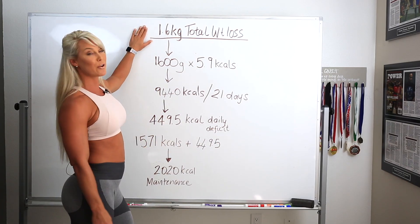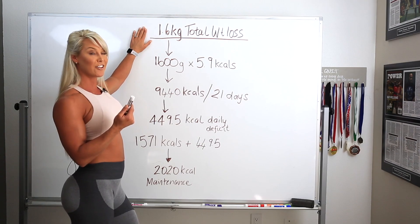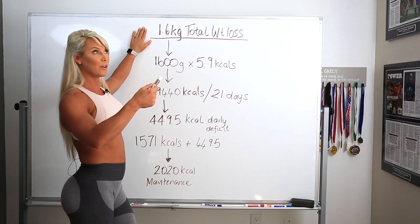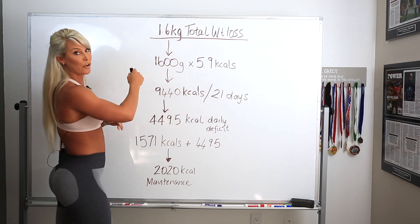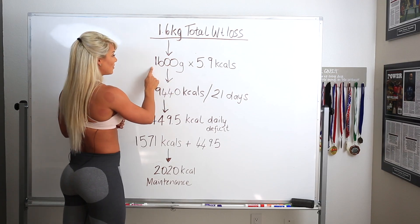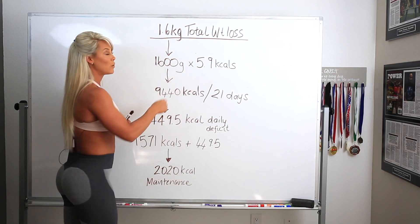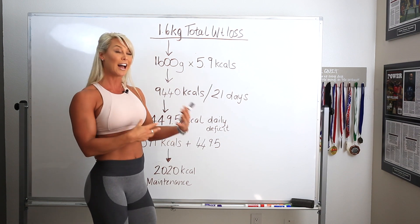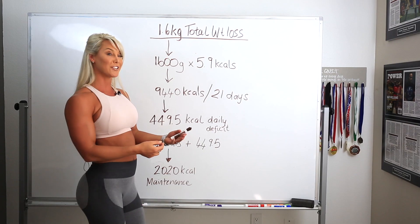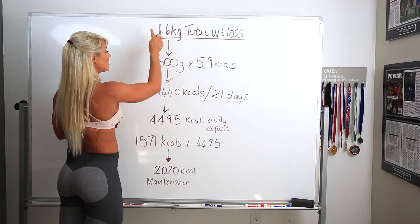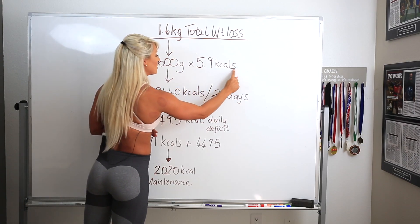This is the total amount of weight I actually lost over the three-week period of dieting. I started at 59.8 and got down to 57.3, so 1.6 kilograms was my total weight loss. Now we want to put that into a gram amount, because we can attribute a caloric value to an amount of weight loss in grams. So 1.6 kilos is also 1,600 grams, and we multiply that by 5.9.